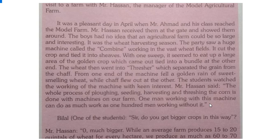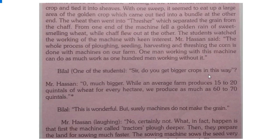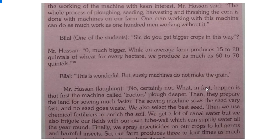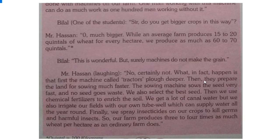Bilal asked a question: do you get bigger crops this way? Mr. Hassan told him that yes, there is a big difference. He compared this farm's produce to an average farm. An average farm produces 15 to 20 quintals of wheat per hectare.